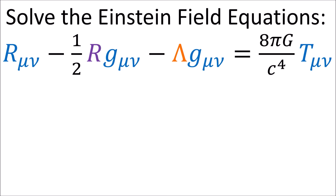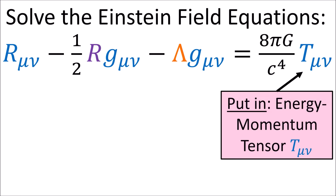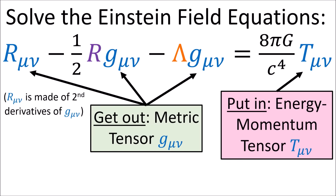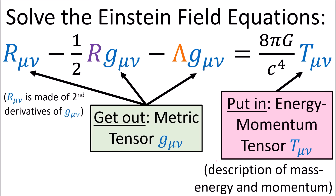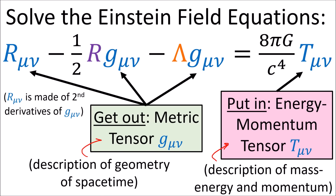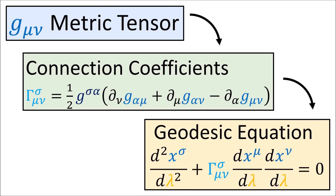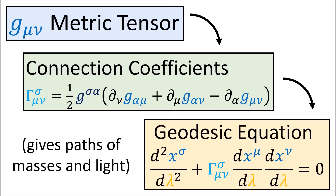So we're now going to find the Schwarzschild solution to the Einstein field equations. Solving the Einstein field equations basically means we put in an energy-momentum tensor T and solve for the metric G — we put in a description of the mass, energy, and momentum in spacetime, and get out a complete description of the geometry of spacetime. Using the metric, we can then solve the geodesic equation, which gives us the paths of massive objects and light beams through curved spacetime, telling us how gravity affects mass and light.